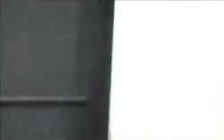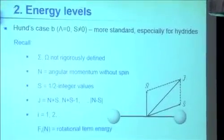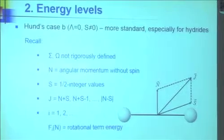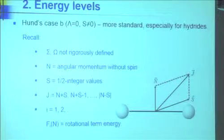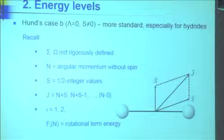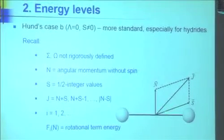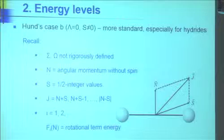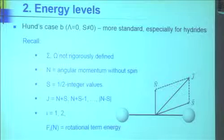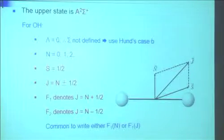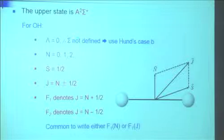Now we have to pay attention to the upper state. This is just like the oxygen case. The upper state is a ²Σ — sigma means lambda is zero, there's no lambda. If there's no lambda, then S gets unlocked and can go its own way, and we get J by a combination where J can have two values. Since we have the ²Σ case, J has two values: N plus a half and N minus a half.